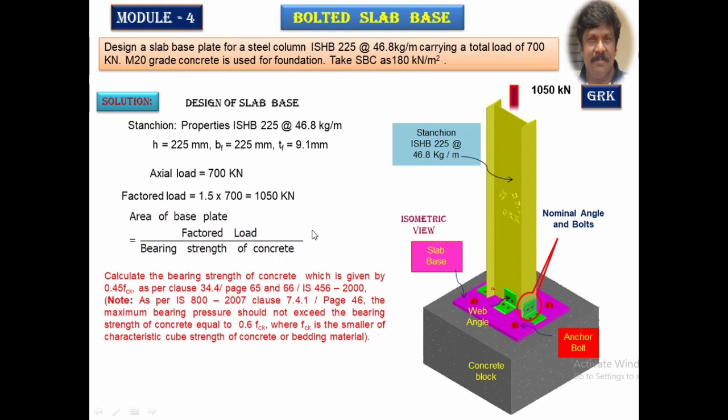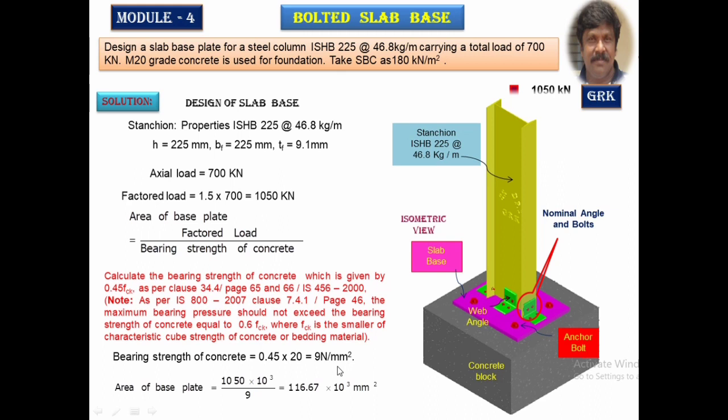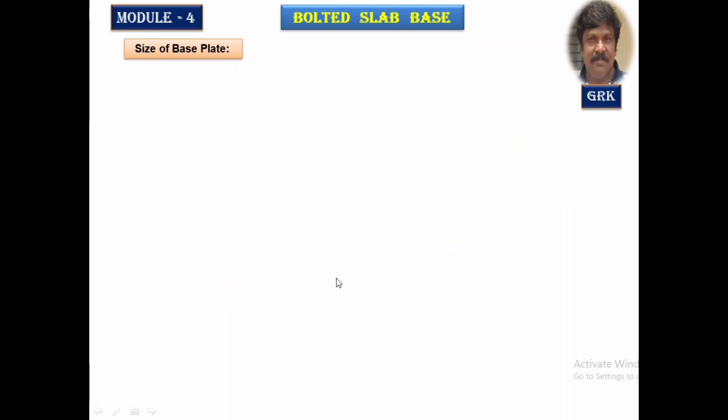However, in this session and coming problems, we are going to restrict ourselves to a bearing strength of 0.45×fck. Taking 0.45×fck for M20 grade concrete (characteristic strength = 20 N/mm²), the bearing stress works out to 9 N/mm². The area of the base plate is therefore equal to 116.67 × 10³ mm².